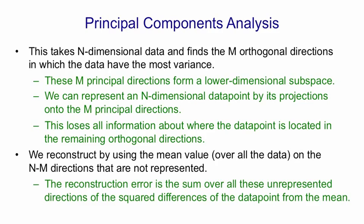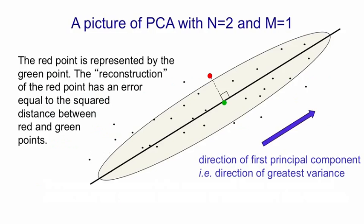So consider two-dimensional data that's distributed according to an elongated Gaussian like this. The ellipse is meant to show a kind of one-standard deviation contour of the Gaussian.